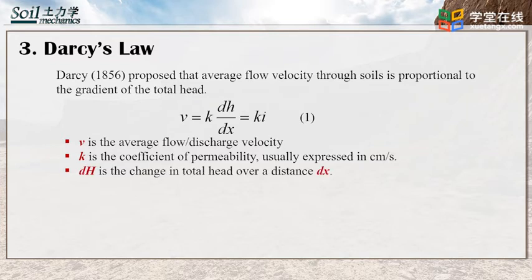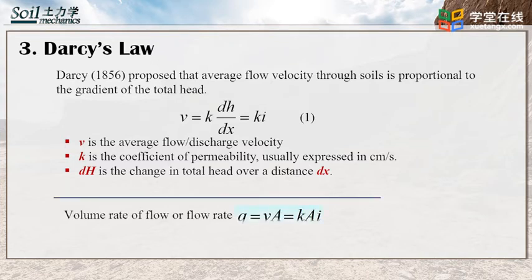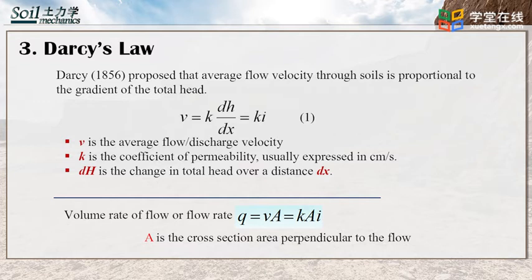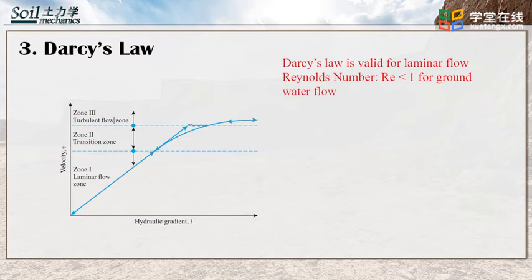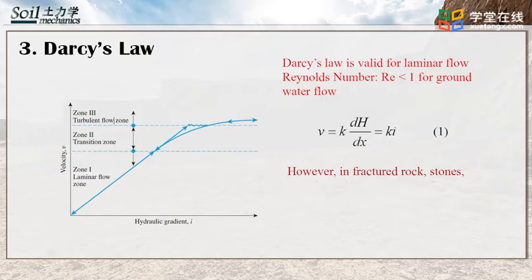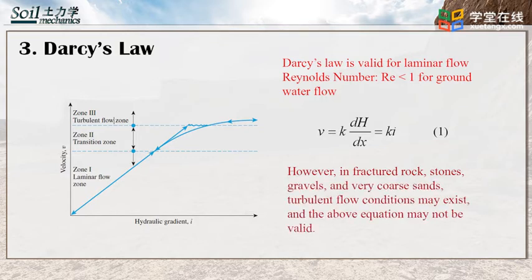DH is the change of total head over distance DX. The volume rate of flow or flow rate Q becomes V times A, or K times I times A, where A is the cross-sectional area perpendicular to the flow. Note that Darcy's law is valid for laminar flow. In fractured rock, stone, gravel, or very coarse sand, turbulent flow conditions may exist and Darcy's equation may not be valid.